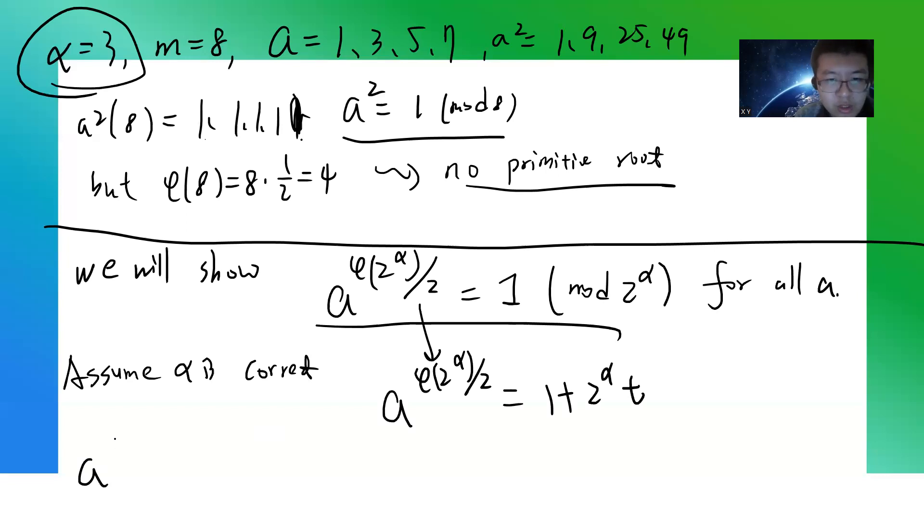Okay, so if you square, you get a^(φ(2^α)) = 1 + 2^(α+1)·t + 2^(2α)·t². So this means that a^(φ(2^α)) mod 2^(α+1) will equal 1.